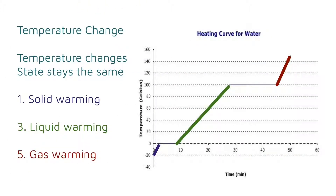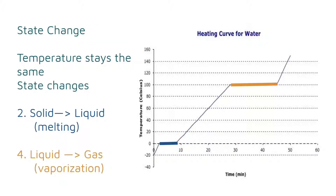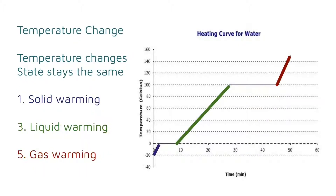So you might have noticed there are two different types of sections in a heating curve. In three of the sections, the temperature is changing, and in two of the sections, the state of matter is changing. For the temperature change sections, the temperature will change in a linear fashion, but the state of matter will stay the same.